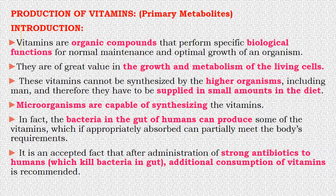In this topic, we are going to talk about the production of vitamins. We have already seen in the second unit that most of the primary metabolites are either organic acids, alcohols, or amino acids. A vitamin is an organic compound which has a variety of vital roles in the growth and metabolism of a living organism. Based on the type of vitamin, the specificity of its function will also vary.